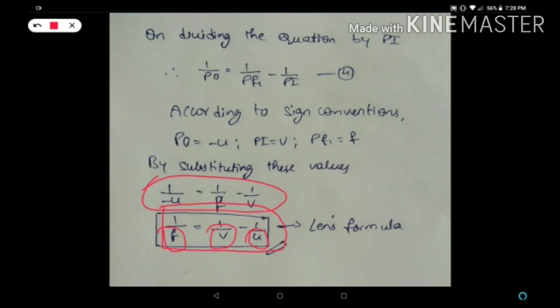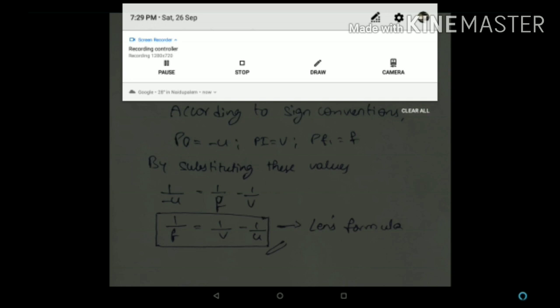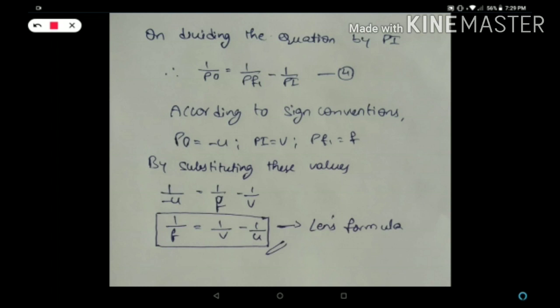For the lens formula we only need three variables: focal length of the lens, image distance, and object distance. For the curved surface formula we also need the refractive indices of the two surrounding media and the lens. So the lens formula is 1/f = 1/v minus 1/u. This is one of the most important derivations in 10th standard. In the next video I will explain the lens maker's formula. Thank you for watching, bye!